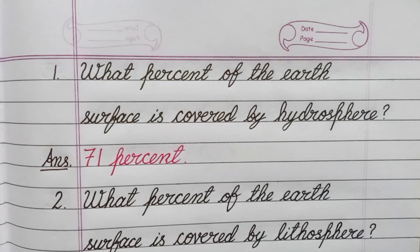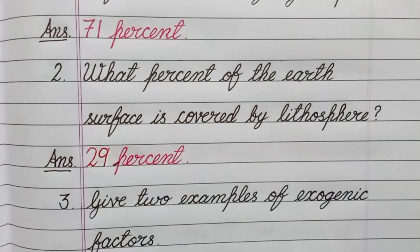Question number one: What percent of the earth surface is covered by hydrosphere? Answer: 71 percent. Question number two: What percent of the earth surface is covered by lithosphere? Answer: 29 percent.